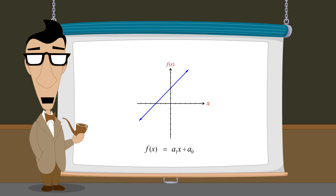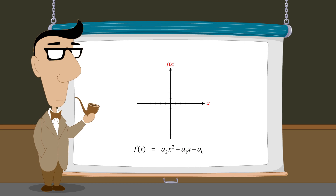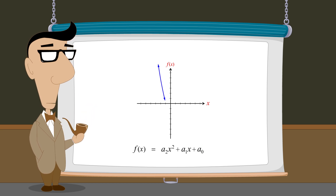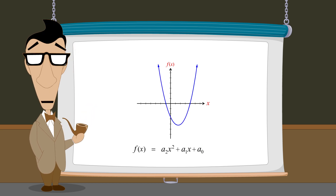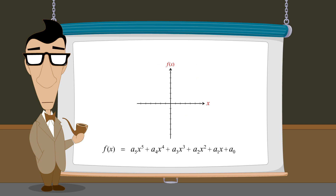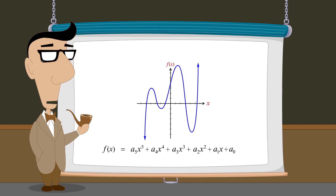We also covered second-degree polynomial functions known as quadratic functions, whose graphs are parabolas. As we will see in this lecture, the graphs of higher-degree polynomial functions can be much more interesting and varied. In this lecture, we will see how the shapes of those graphs are affected by the individual terms contained in the polynomial.